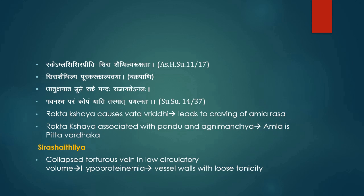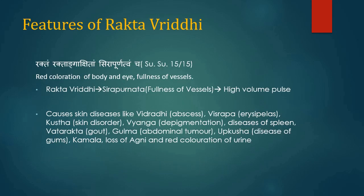Dhatu kshaya leads to aggravation of Vata and decreased digestive power. Features of Rakta vriddhi: it causes red coloration of the body and eyes, and fullness of vessels (Sira punatama). Rakta vriddhi leads to Sira punatata, meaning fullness of vessels, which ultimately causes high volume pulse. Rakta vriddhi also causes skin diseases like Vidradi, Visarp, Kustha, Vyanga, diseases of spleen, Gulma, Upakusha, Kamala, loss of Agni and red coloration.